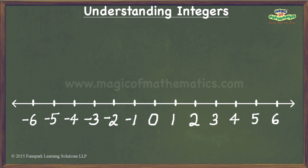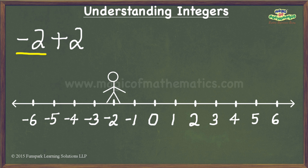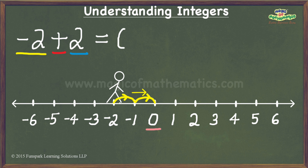The third example is negative 2 plus 2. Here, the first operand is negative 2 and hence I begin my journey from negative 2. The operator being the addition operator, I turn to walk towards the right. The second operand is 2, which means I walk two steps forward, thereby ending up at 0. And thus, the given expression evaluates to 0.